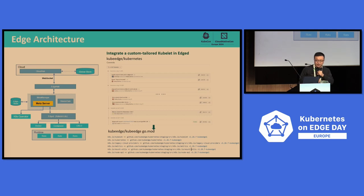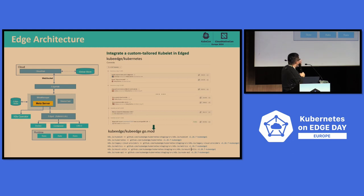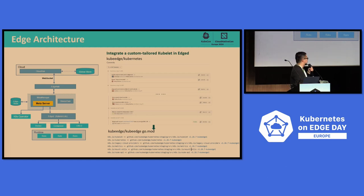Next, I will give an introduction of the edge architecture. This is the overall architecture of the edge node. You can see the cloud side sends metadata and other messages via WebSocket protocol to the edge node. The edge hub receives the metadata and sends it to the MetaServer, which stores it in the database. Then it's sent to what we call the EdgeD — it's actually a lightweight kubelet — which runs container applications on the edge node.